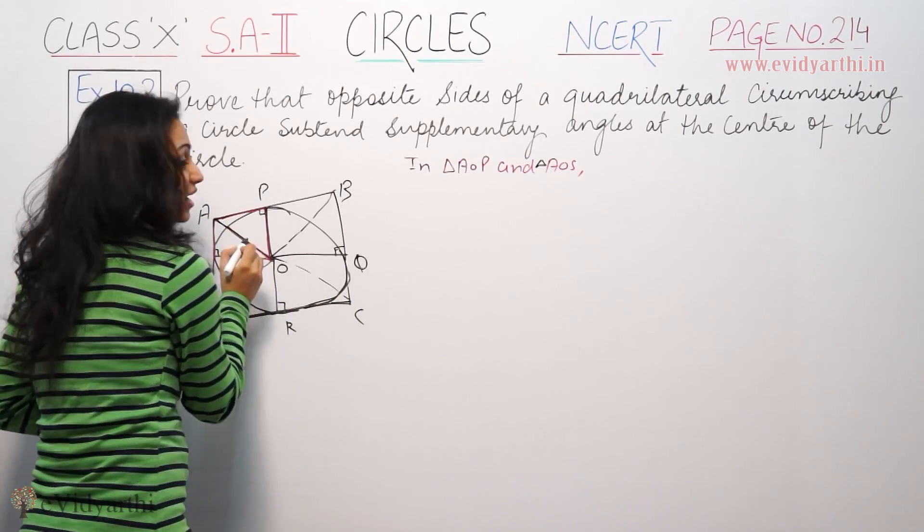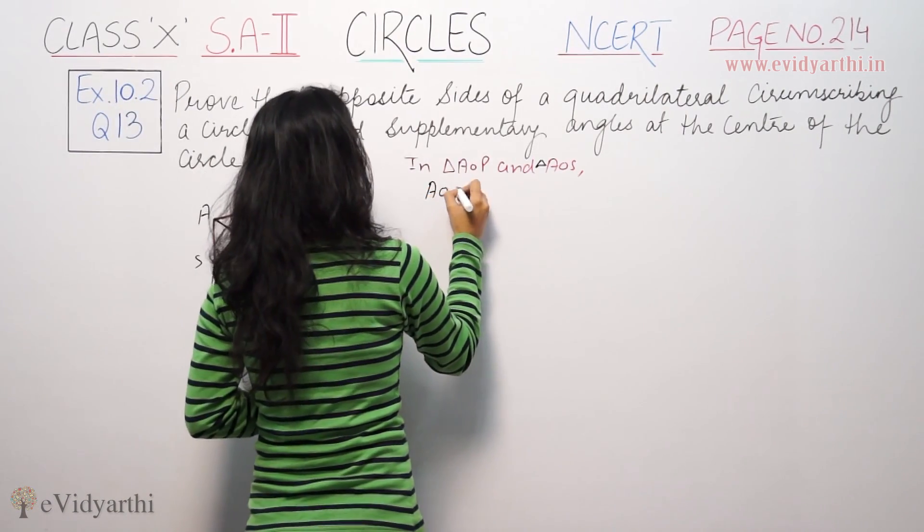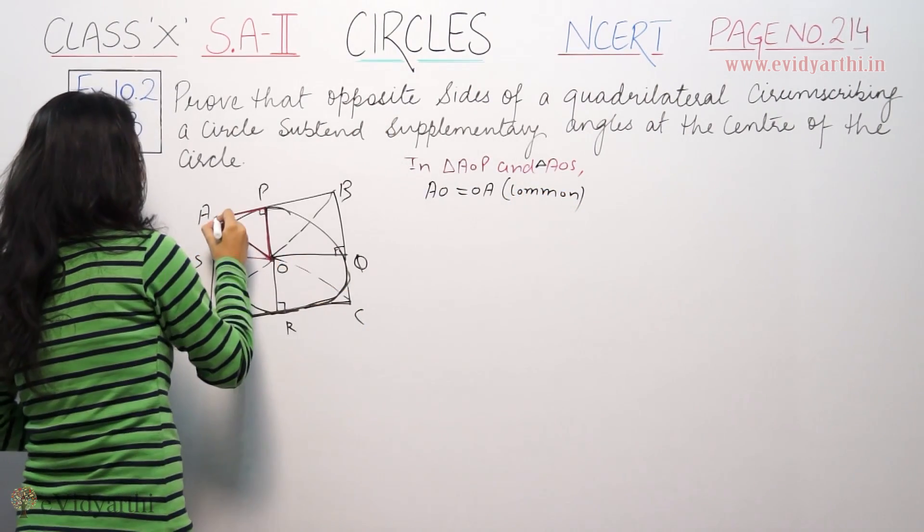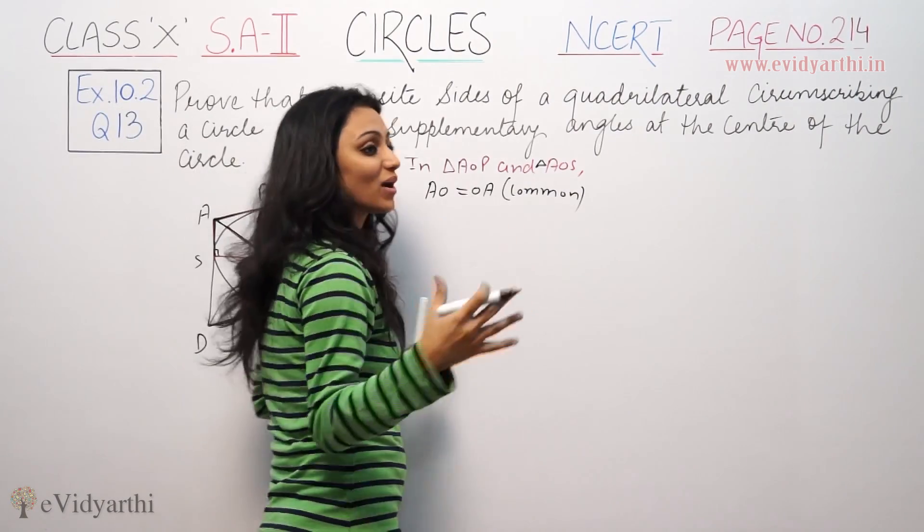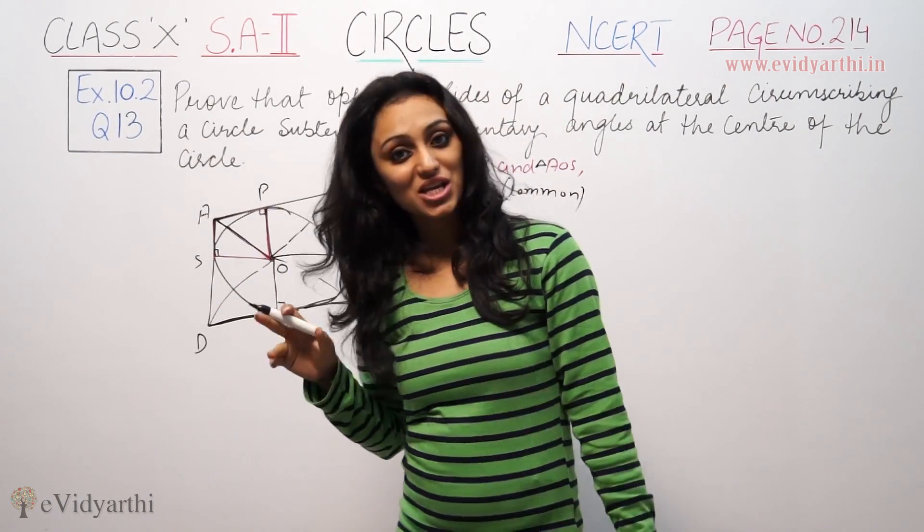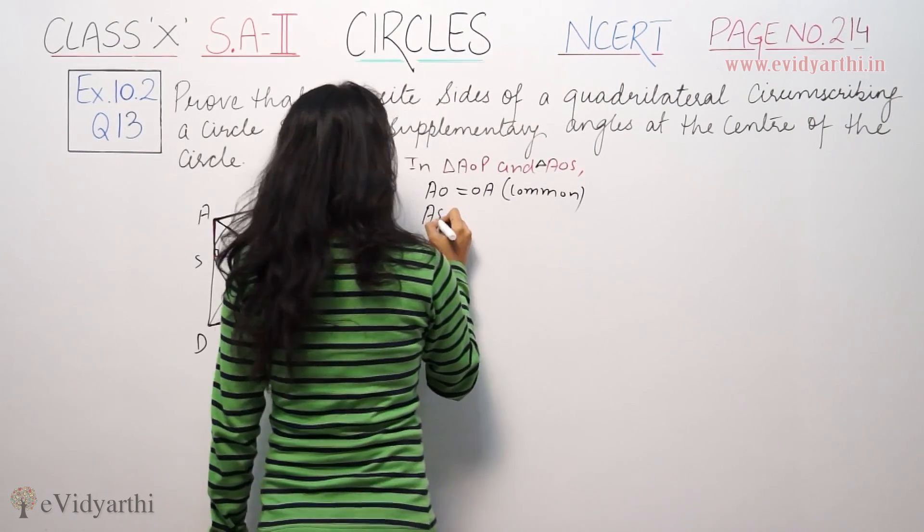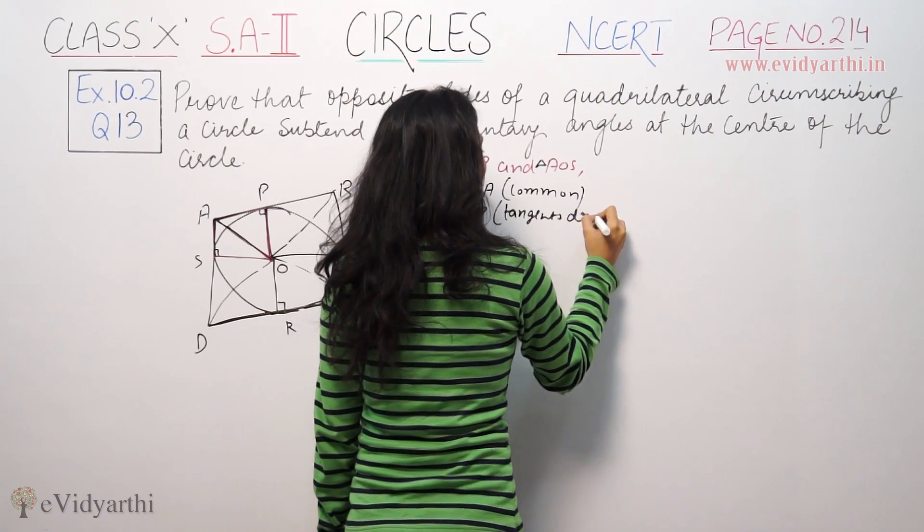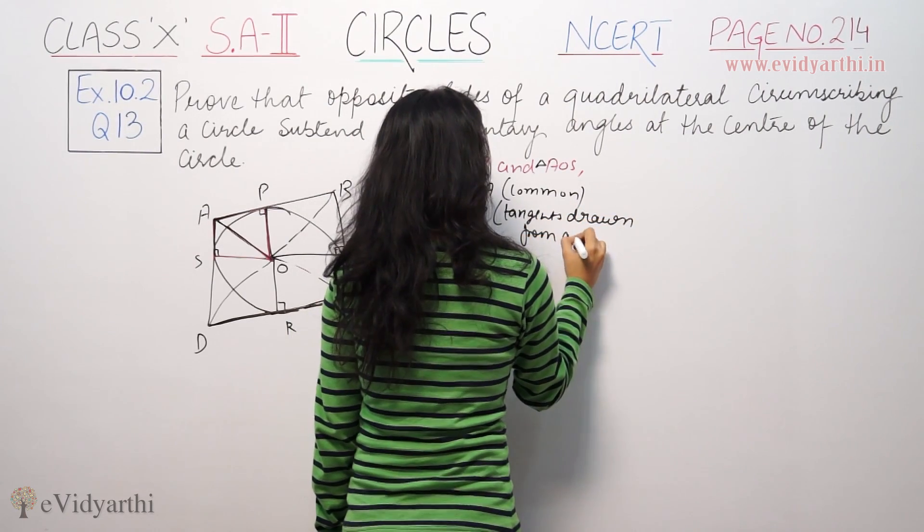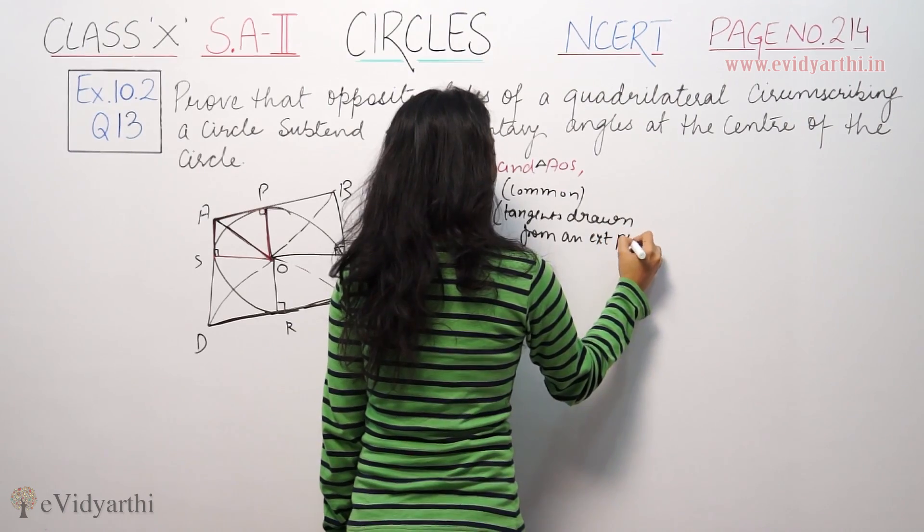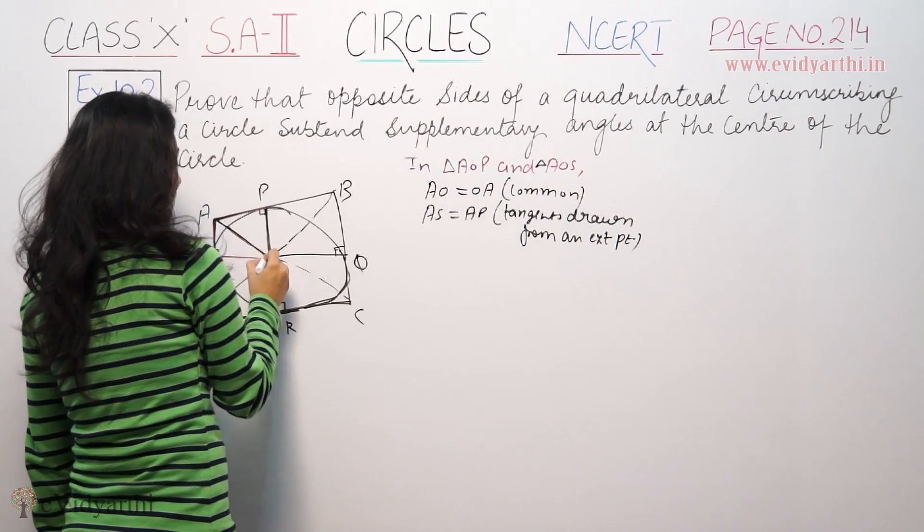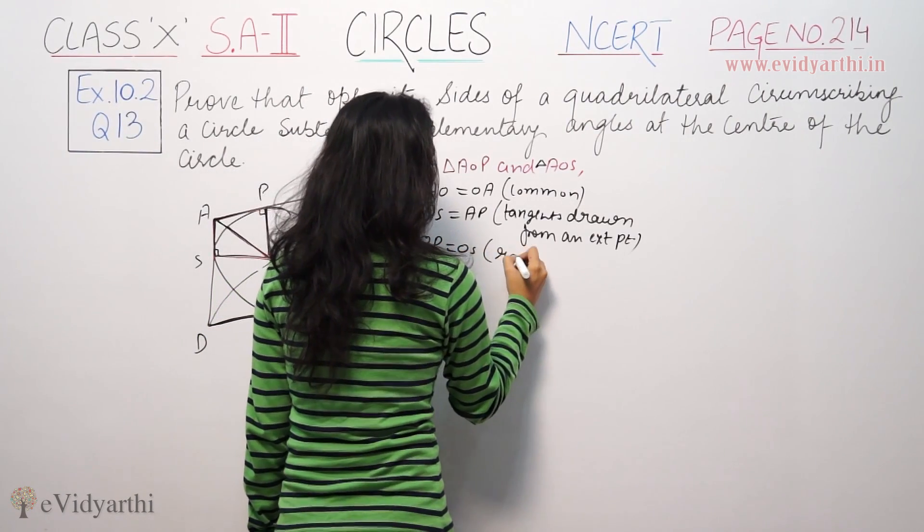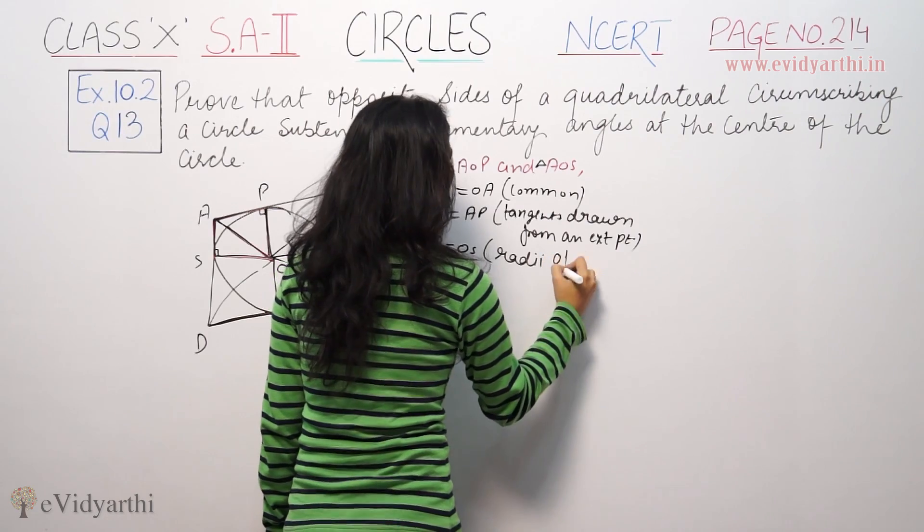We are proving triangles AOP and AOS are congruent. If we are leaving a circle, tangents from the same point have equal length. AP equals AS, the radii OP equals OS, and AO equals AO by common side.